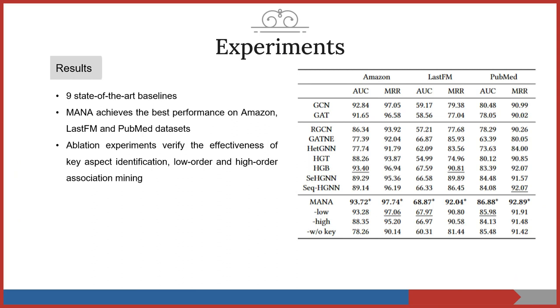Finally, let's see the experiments. We compare MANA with nine state-of-the-art baselines. As shown in the red table, our model achieves the best performance on three datasets. Also, from the ablation studies, we can find that key aspect identification, low-order and high-order association mining play important roles in link prediction tasks.